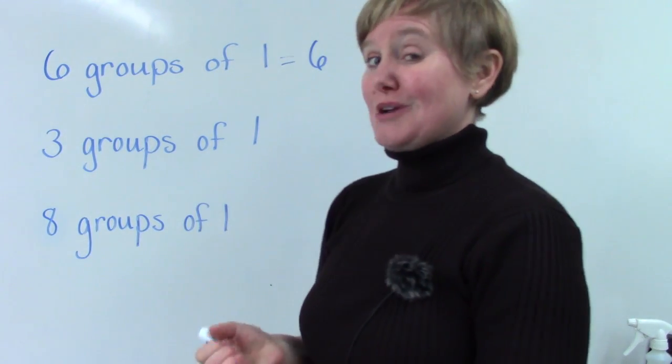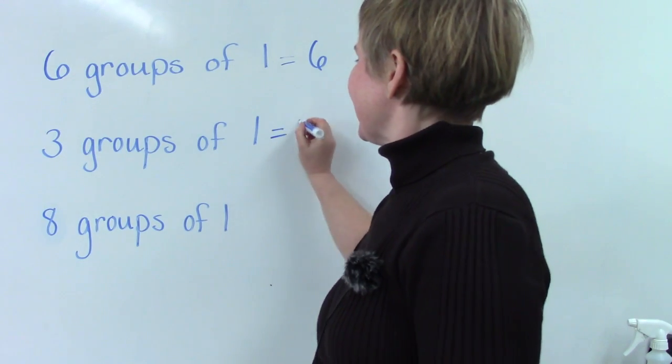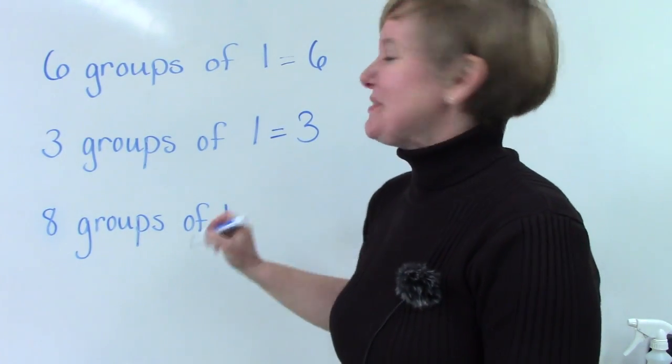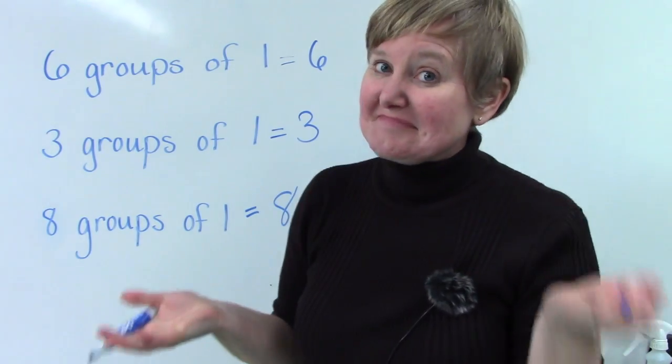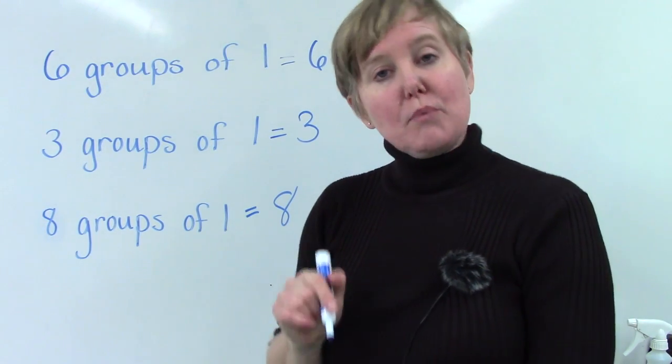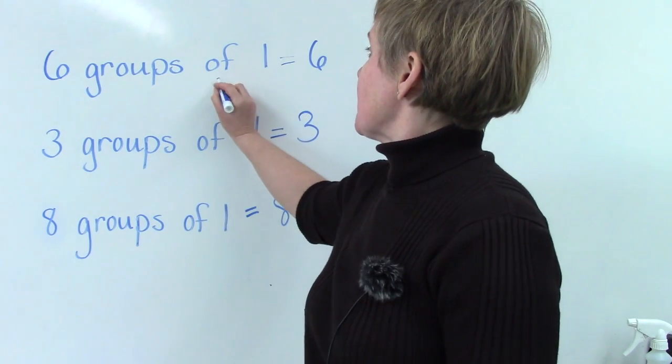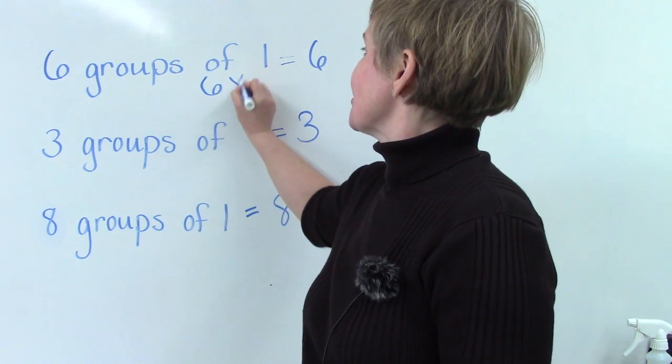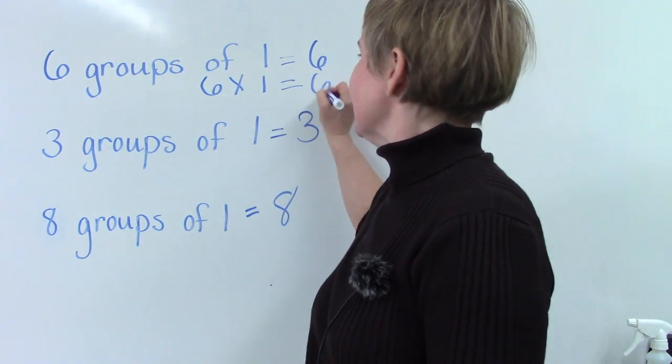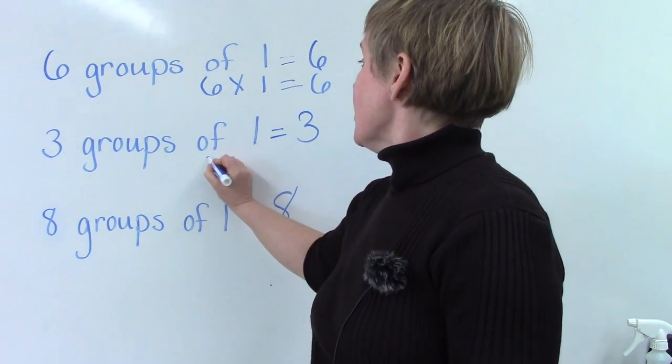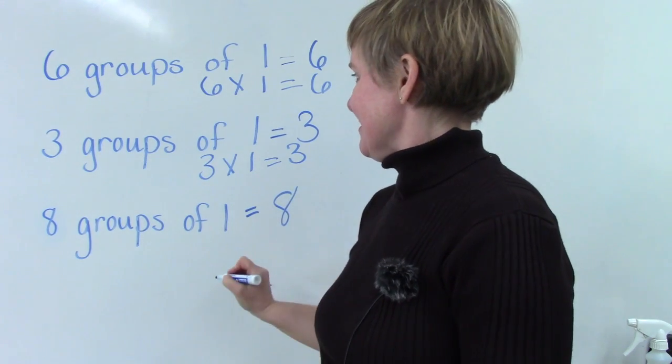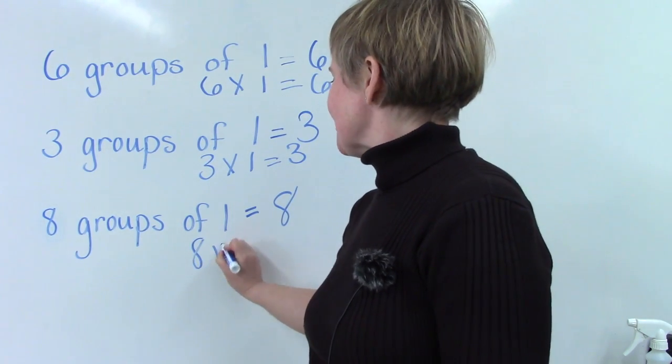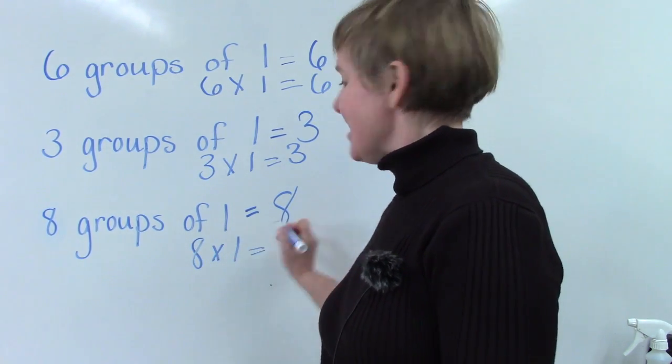What if we have three groups of one? It's three. What if we have eight groups of one? It's eight. And we can also write this the other way where we would say six groups of one equal six. Or three groups of one equals three. Or eight groups of one equal eight.